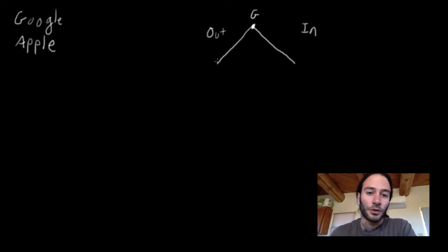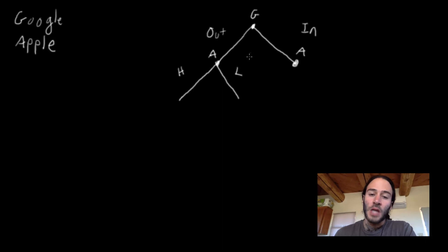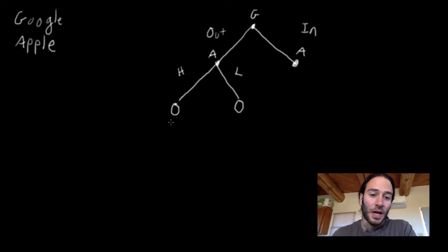If Google chooses not to enter the market, Apple still needs to make a choice — it chooses its pricing strategy, either high or low. This is a simplification, but it gets the point across. If Google doesn't enter, they get zero payoff in both cases. If Apple chooses a high price, they get four because they have a monopoly. If they charge a low price, they get negative one.